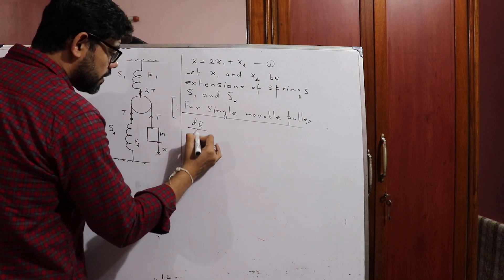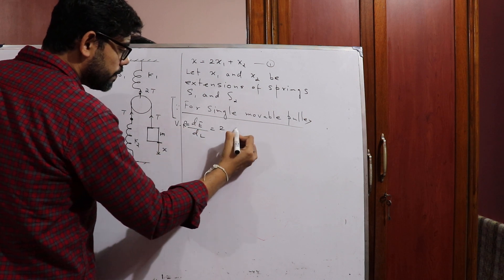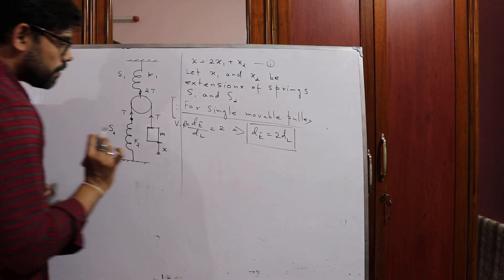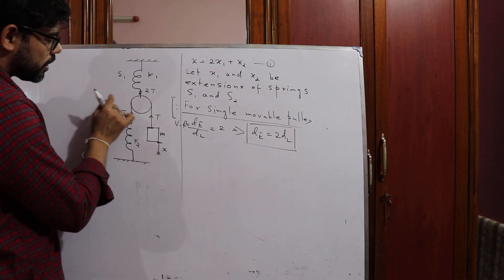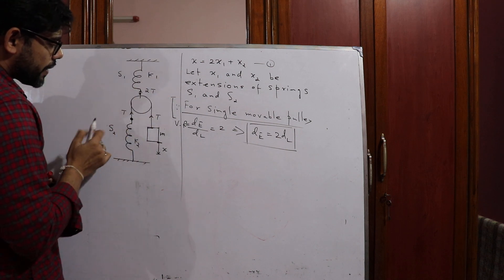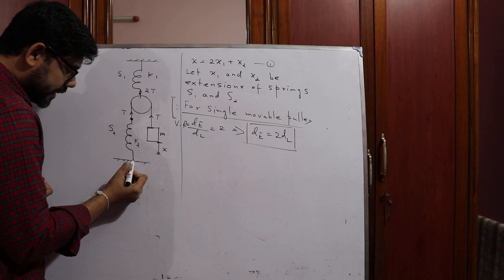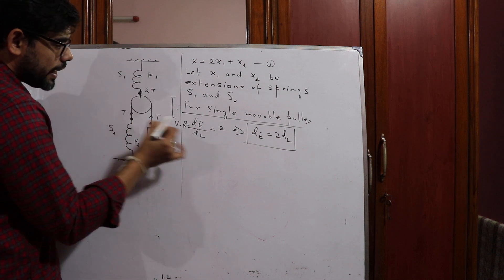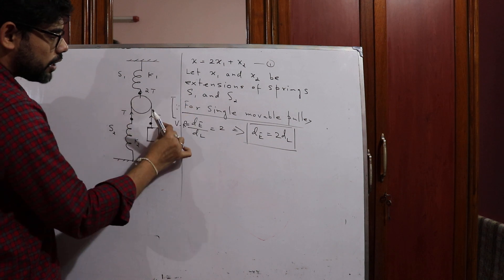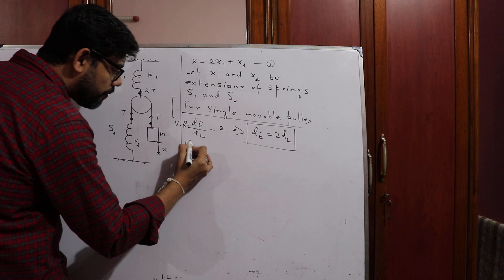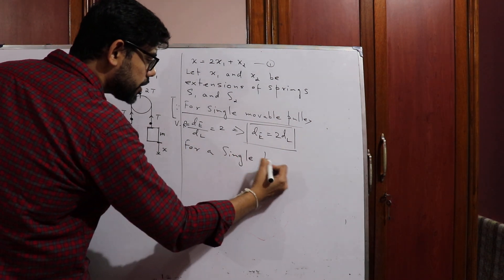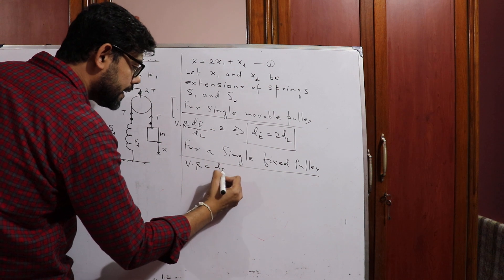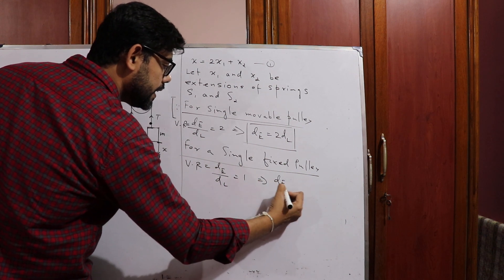The reason for the factor of 2 is: for a single movable pulley, the velocity ratio dE/dL equals 2, so dE = 2·dL. If you consider spring S1 and the block — this part is fixed to the rigid support, this is the load point, and this is the effort point — if the load displaces by x1, the effort will displace by 2x1. For a single fixed pulley, the velocity ratio dE/dL equals 1, so dE = dL.